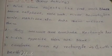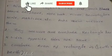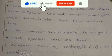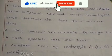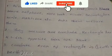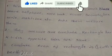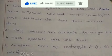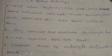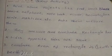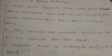Activity 2 is a group activity. Give some objects like pad, book, blackboard, cell phone, notebook, mirror, geometric box, scale, matchbox, etc. Ask them to measure them. They measure and conclude rectangles have four sides and opposite sides are the same. Conclude that the area of a rectangle is length times breadth.